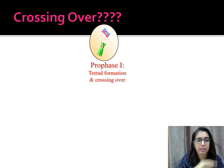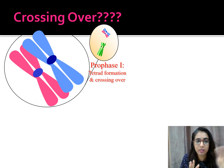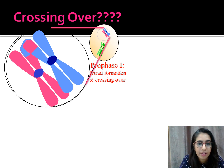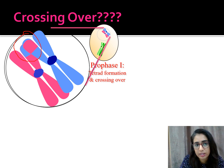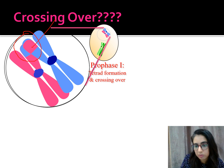Crossing over only happens in prophase 1 after synapsis — that is, after tetrad formation. Crossing over is where the exchange of genetic material happens between homologous chromosomes. You can see that the blue chromosome has received some pink segments and the pink one has received some blue — meaning they have exchanged genetic information. This can happen at any part of the chromosome, not just one point, since there are many genes along the DNA.